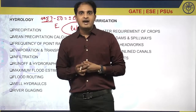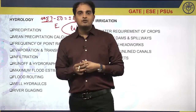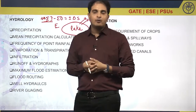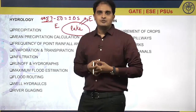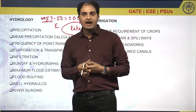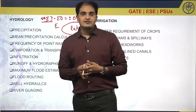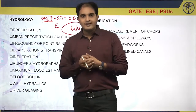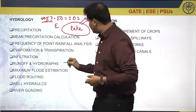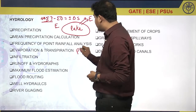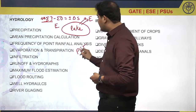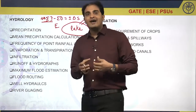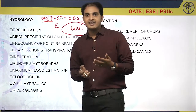An isopleth is the line joining points of equal potential evapotranspiration. So far we have discussed isohyet, isonif, and isopleth. Isopleth stands for the line joining points of equal potential evapotranspiration, which is denoted by PET — meaning the maximum evapotranspiration that can take place.